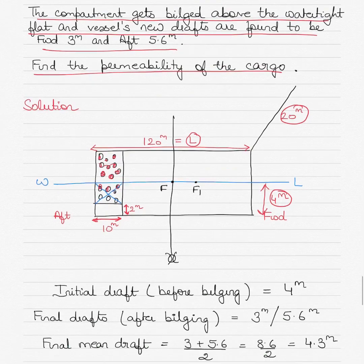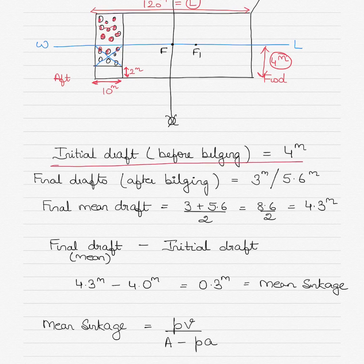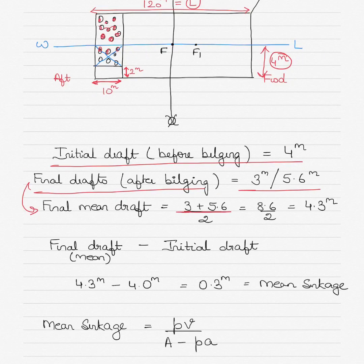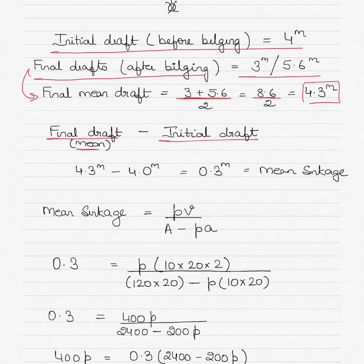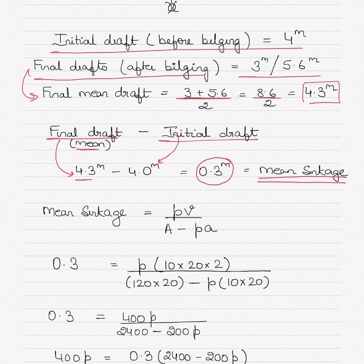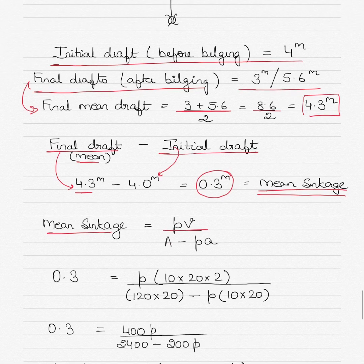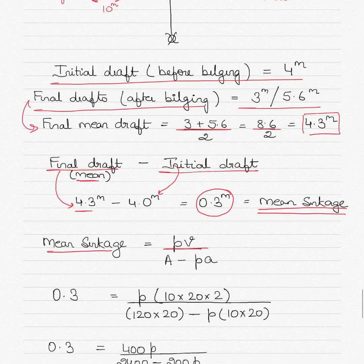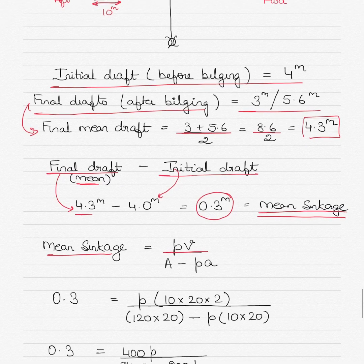Because it is an end compartment, as water filled in, the aft draft increased and the forward draft reduced. The aft draft became 5.6 meters and the forward draft became 3 meters. Your initial draft before bilging was 4 meters. The final mean draft is calculated by adding the forward and aft drafts and dividing by 2: (3 + 5.6) / 2 = 8.6 / 2 = 4.3 meters. Mean sinkage equals final mean draft minus initial draft: 4.3 minus 4 = 0.3 meters.